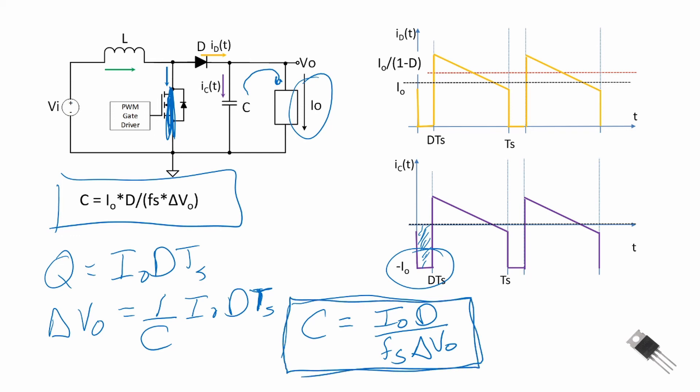There is also loss in the capacitor due to its equivalent series resistance (ESR). For any switch-mode power supply, we want a low-ESR capacitor on the output filter. Depending on device size, we use an electrolytic capacitor for larger designs or a multi-layer ceramic chip (MLCC) capacitor for smaller power electronics. Minimizing ESR minimizes loss, though the dominant loss contributors remain the MOSFET and the diode.